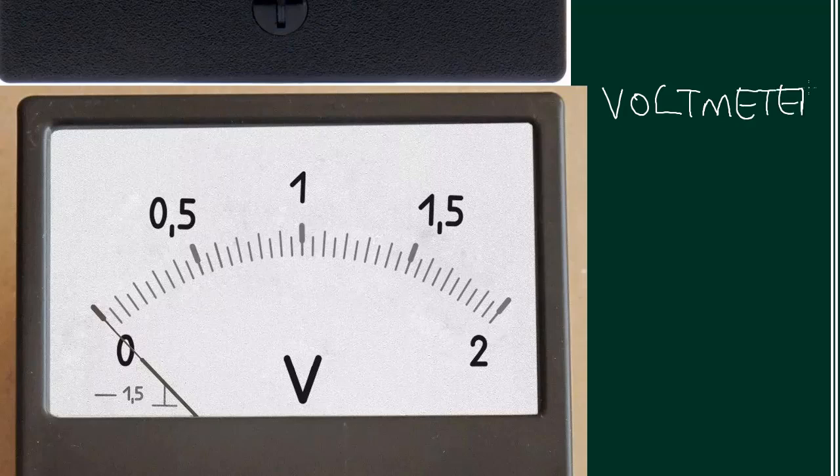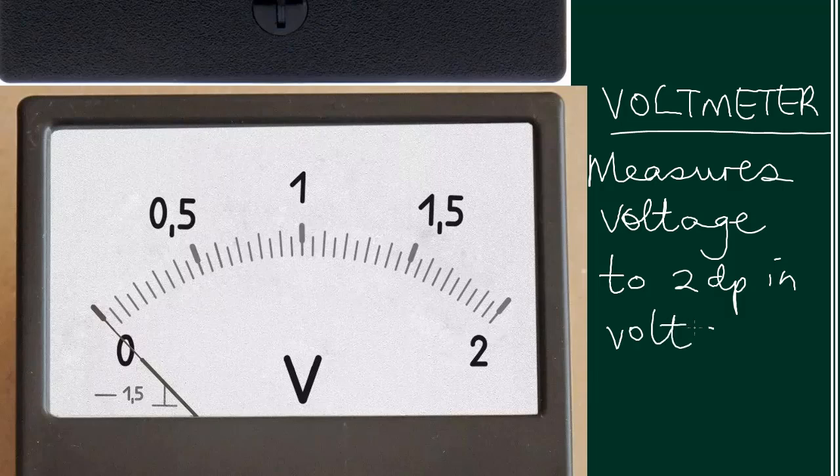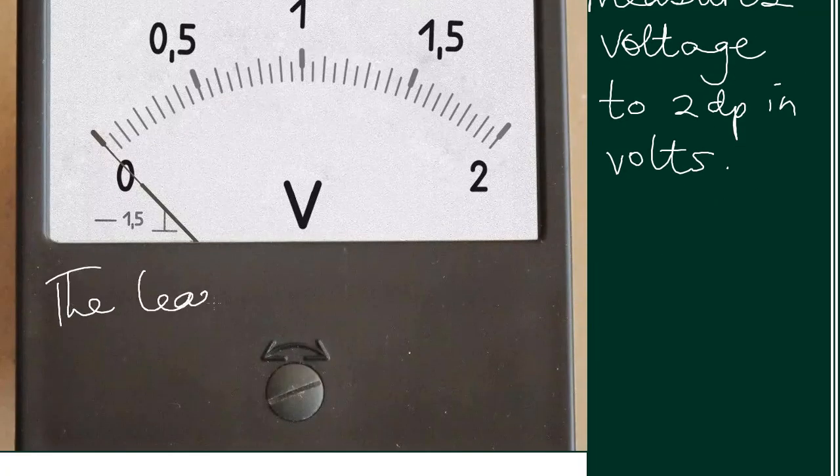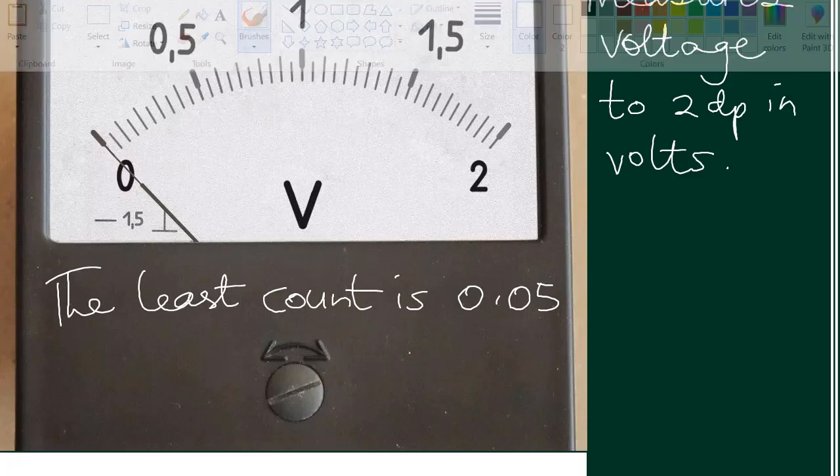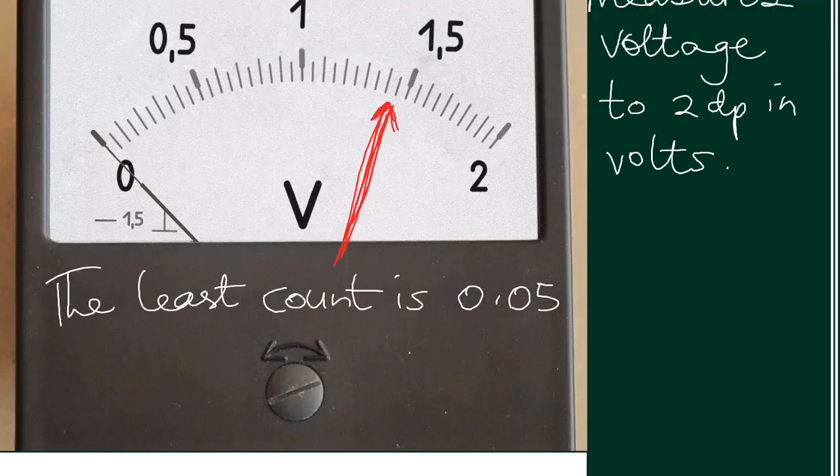Then we have a voltmeter. This one measures voltage, or you can say PD or EMF, to three decimal places and in volts. For example here, the list count for this one is 0.05.